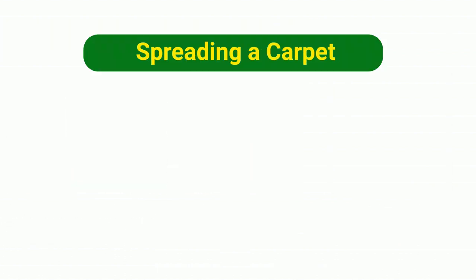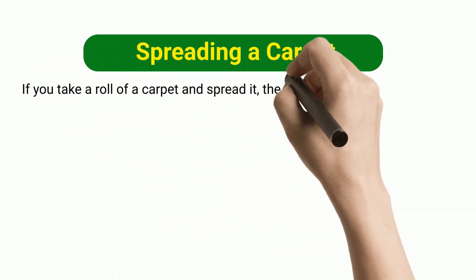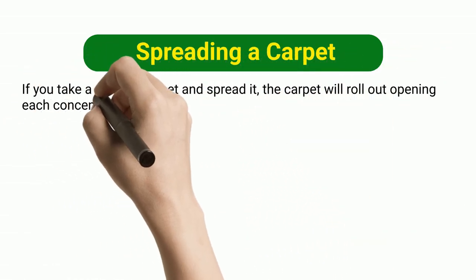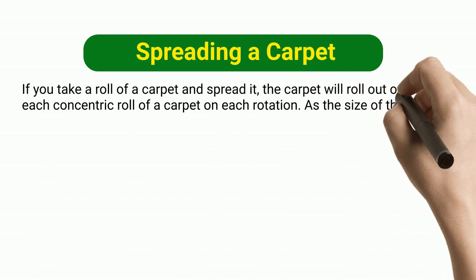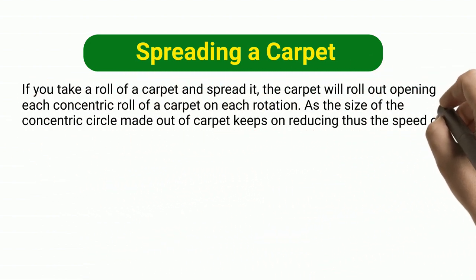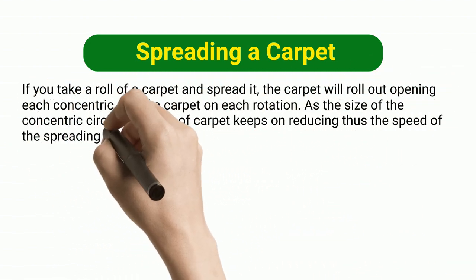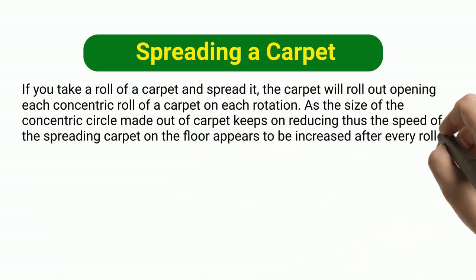Spreading a carpet. If you take a roll of carpet and spread it, the carpet will roll out, opening each concentric roll on each rotation. As the size of the concentric circle made out of carpet keeps reducing, the speed of the spreading carpet on the floor appears to increase after every rollout.